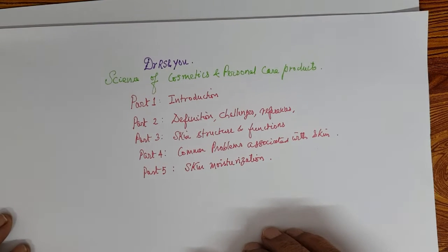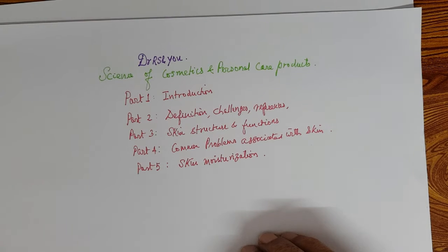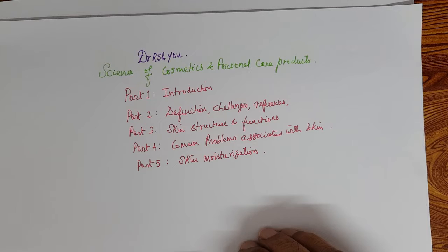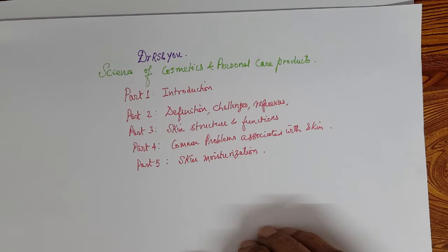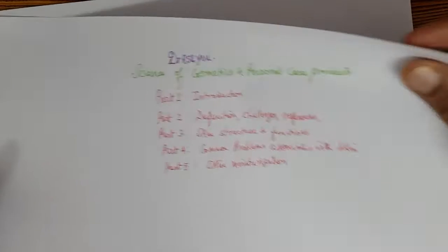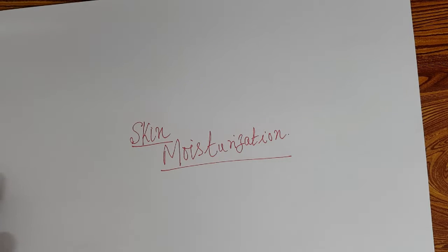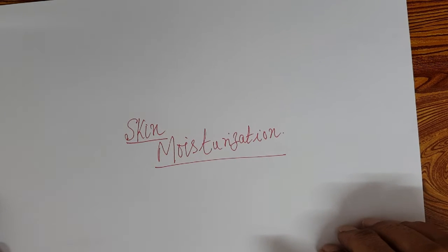In this series, we are first covering the substrate — the skin, hair, and teeth — then the problems associated with them in relation to cosmetic and personal care products, then the formulation part, ingredients, and finally how to put the ingredients together to get the formulation. Today we are discussing skin moisturization.